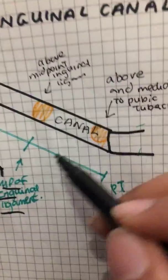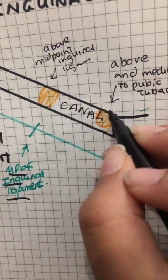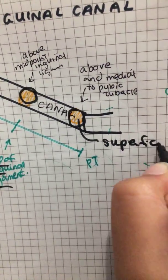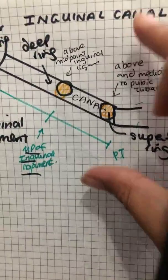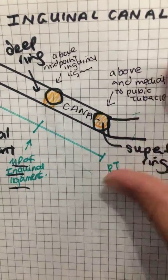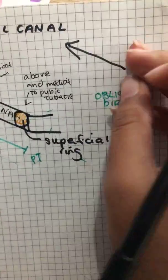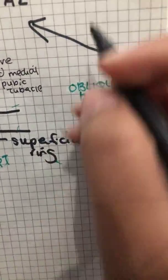The inguinal canal runs from the superficial ring to the deep ring. It runs in an oblique direction, as you can see, from the pubic tubercle toward the anterior superior iliac spine. This oblique direction is very important in terms of expansion and function.